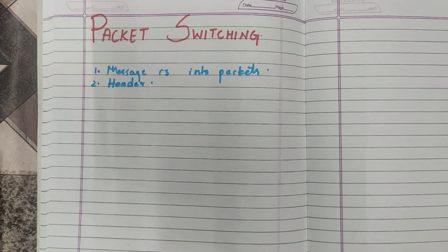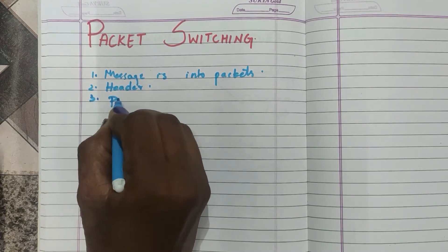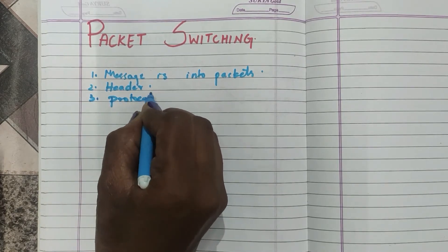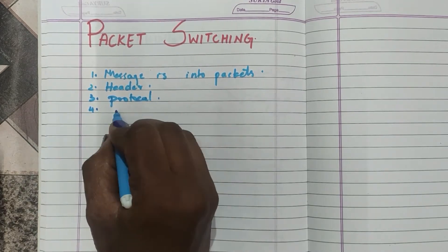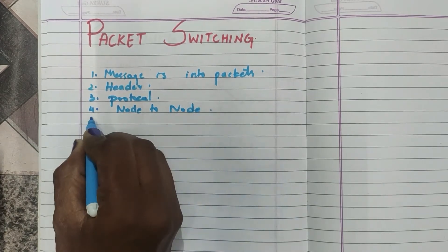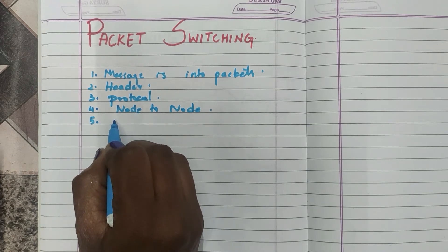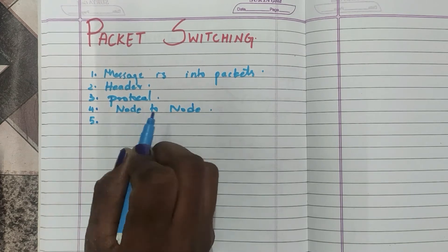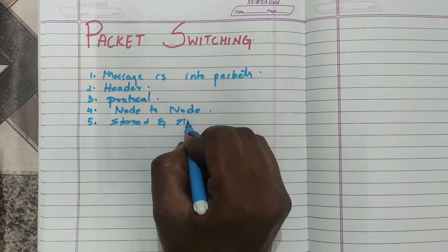Any other control information can also be in the header. The size of each packet depends upon the protocol you use. These packets are sent over the network from node to node, and at each node the packet is stored briefly and then routed according to the information in its header section.